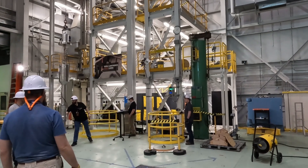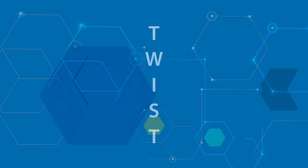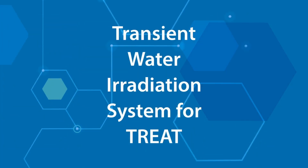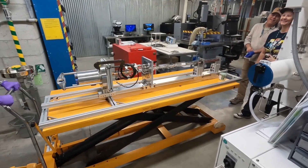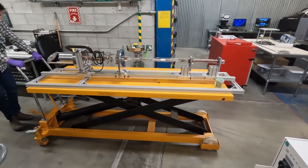The way that we perform these sorts of tests in these facilities require unique testing devices. One of these devices we call TWIST, which stands for the Transient Water Irradiation System for TREAT. The TWIST device is a fairly complex irradiation test device whose purpose is to test the performance of nuclear fuels under accident conditions. The capabilities required to put that together are unique to Idaho National Lab.